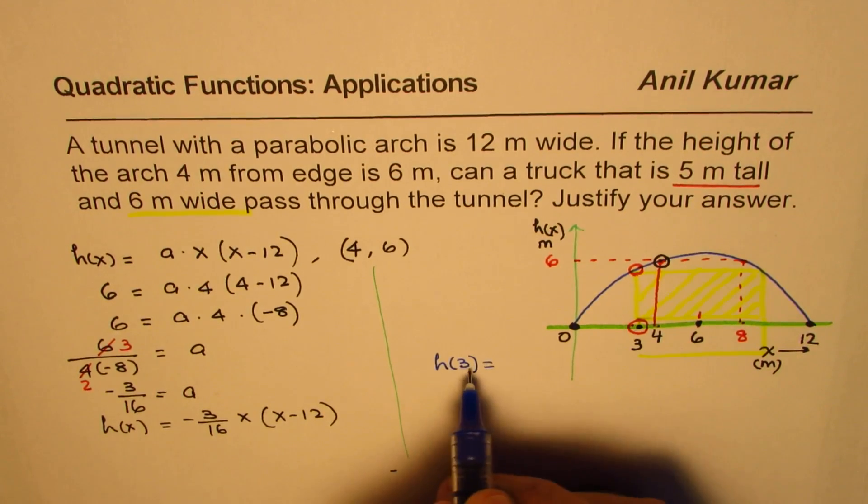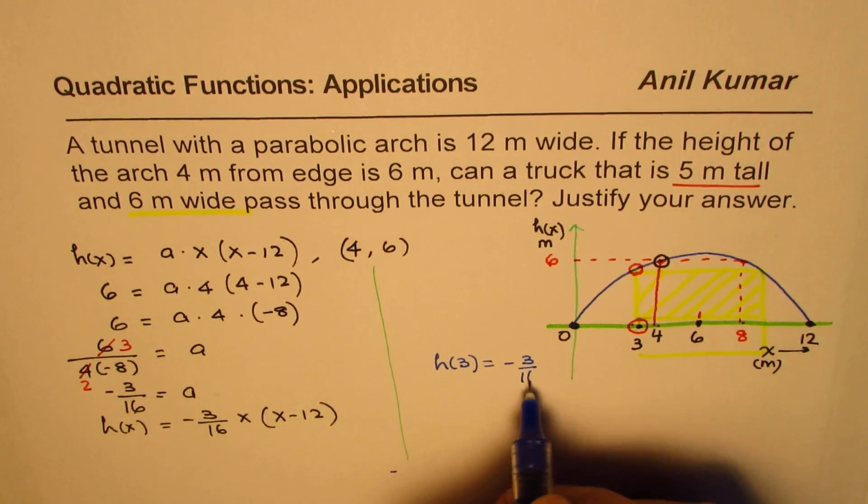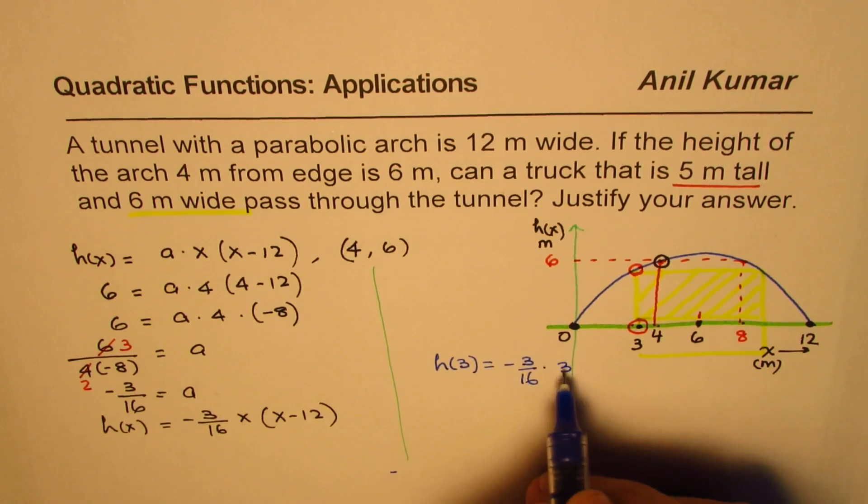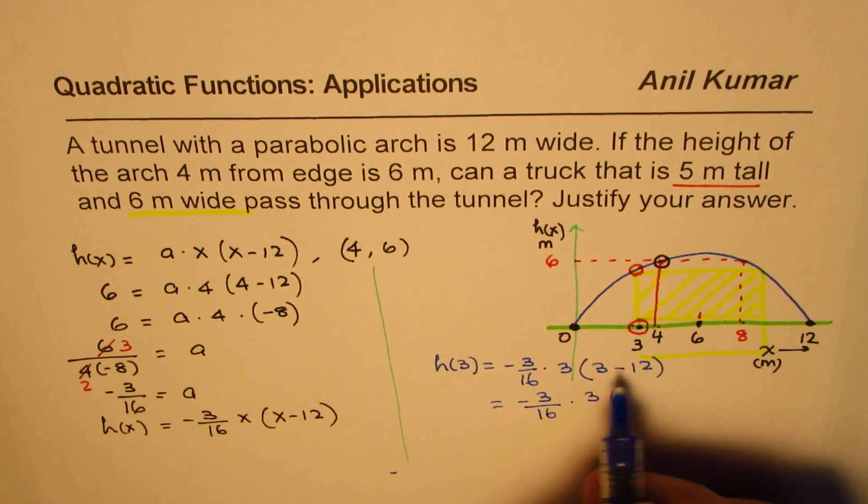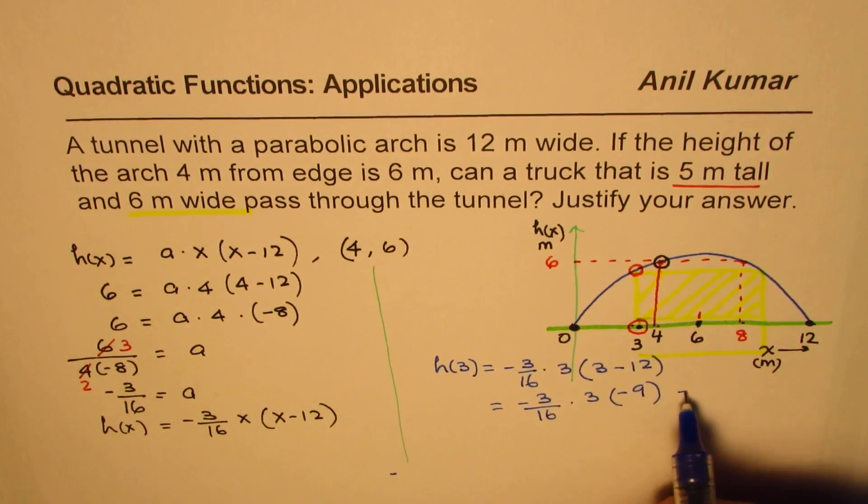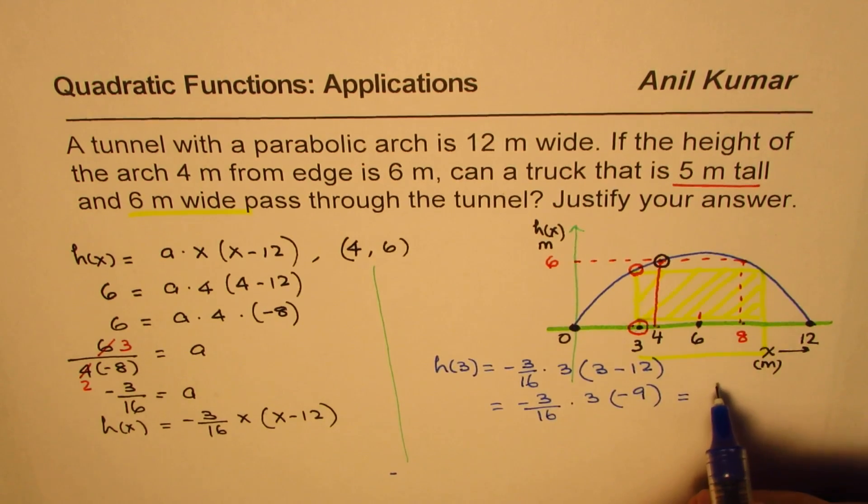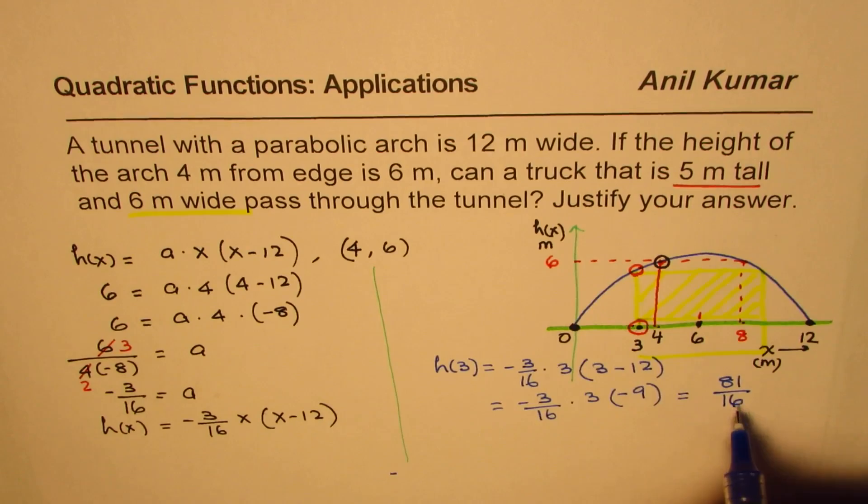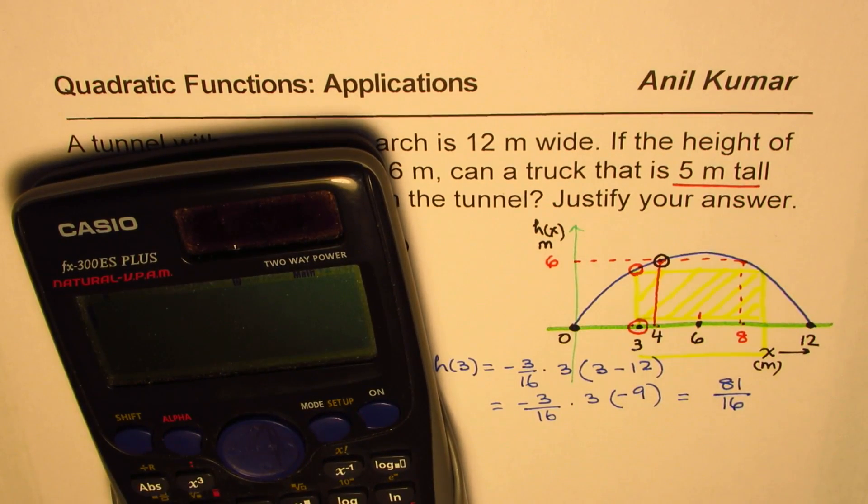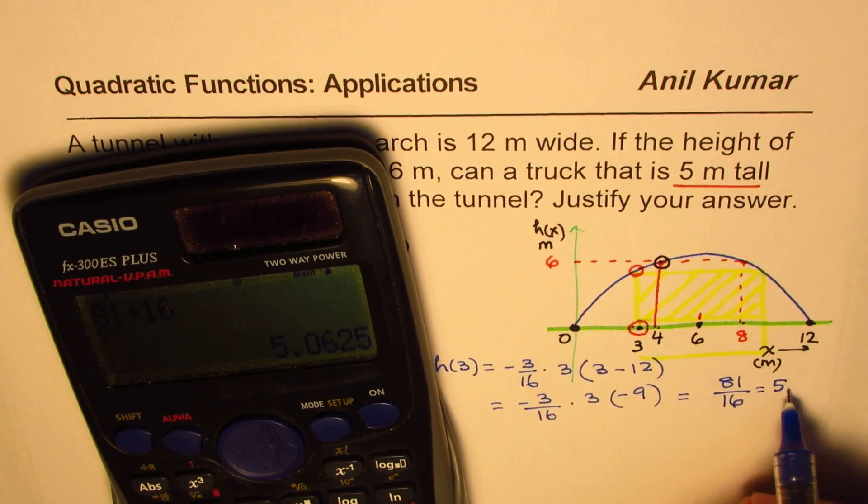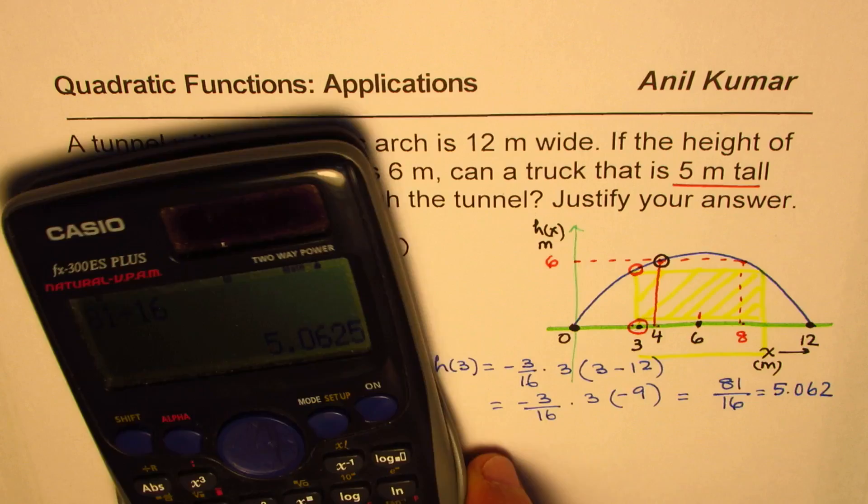So let's find the height of the arc when x equals 3 at this point. So that means h(3) is what we are trying to find. So minus 3 over 16, let's substitute 3 here for x, times 3 times (3 minus 12). And that gives you minus 3 over 16 times 3 times minus 9. So we have minus 81, minus minus becomes plus. So it is plus 81 divided by 16. So the height is 81 over 16. If it is more than 5, then the truck can go through. So we will just check 81 divided by 16 is equal to how much? In decimals, it is 5.06.